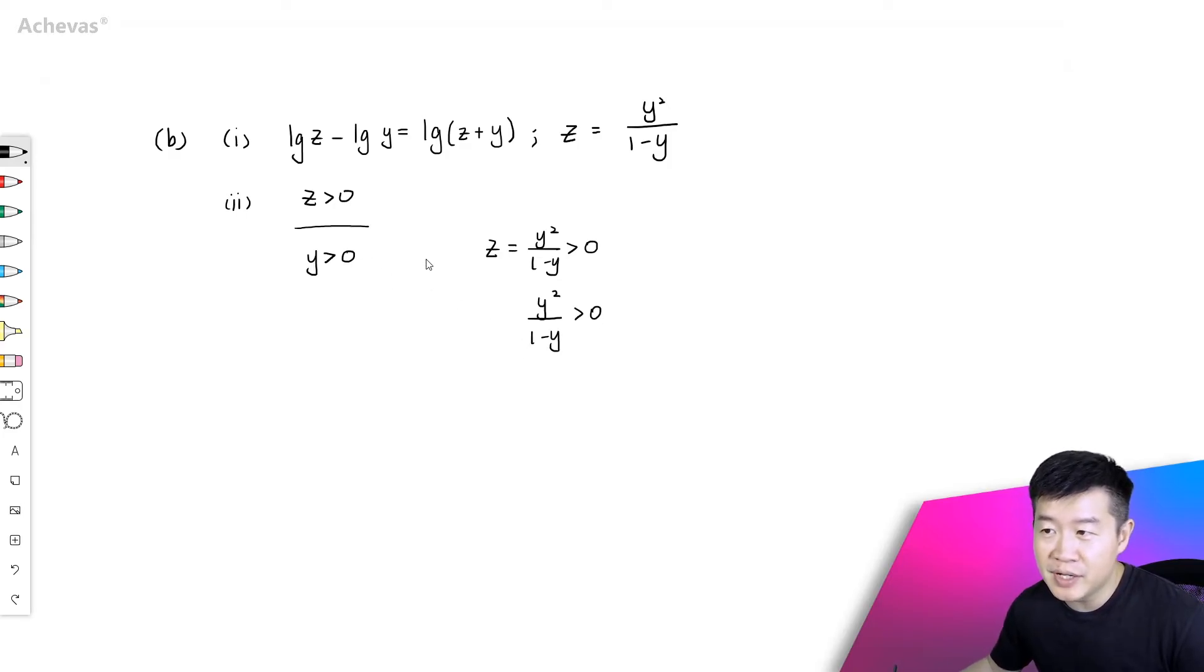Since y is bigger than 0 and this must be bigger than 0, we see the numerator here as a positive expression. Since y is bigger than 0, y square will also be bigger than 0.